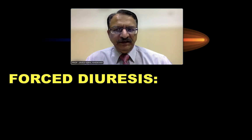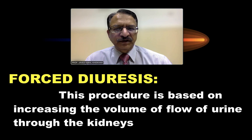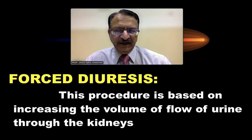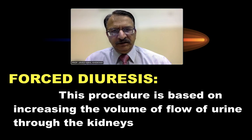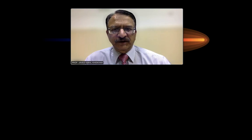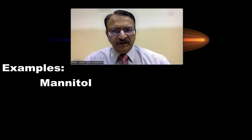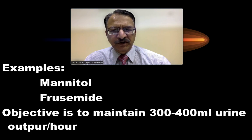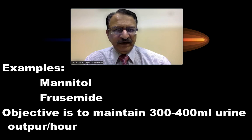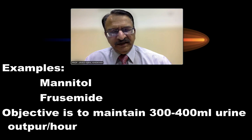The first method, forced diuresis, is based on increasing the volume of the flow of urine through the kidneys. Certain drugs and medicines are given which increase the excretion of urine through the kidney, and when excretion is increased the drug which has been absorbed is washed away with the urine. For example, mannitol is given; mannitol performs the forced diuresis. Then furosemide, a drug which increases the excretion of urine. The main objective is to maintain 300 to 400 millilitres of urine output per hour.